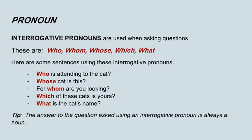Interrogative pronouns are used when asking questions. These are who, whom, whose, which, and what. Here are some sentences using these interrogative pronouns: Who is attending to the cat? Whose cat is this? For whom are you looking? Which of these cats is yours? What is the cat's name? Since we also have interrogative adverbs — why, when, where, and how — a tip to remember the interrogative pronoun is that the answer to the question asked is always a noun.